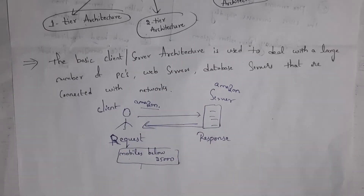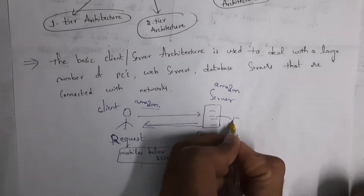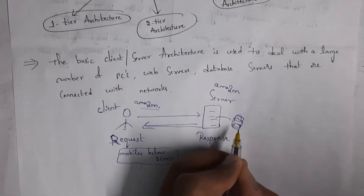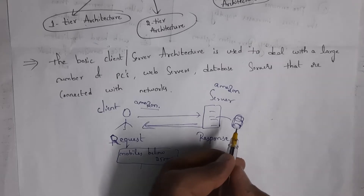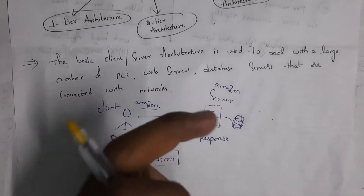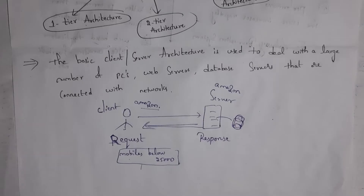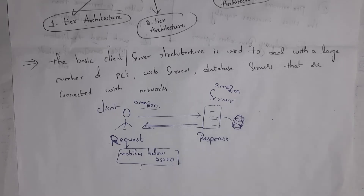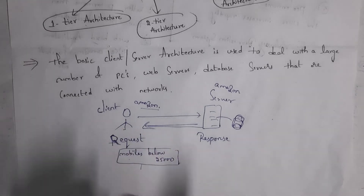Each and every software company contains a server, and inside the server there will be a database where complete data is stored. For example, complete Amazon product details are stored in the Amazon database. Facebook also contains servers with a database inside — if I upload any image, that image is stored in the Facebook database; if I share any post, that post is stored in the Facebook database. This is a simple example of client-server architecture.